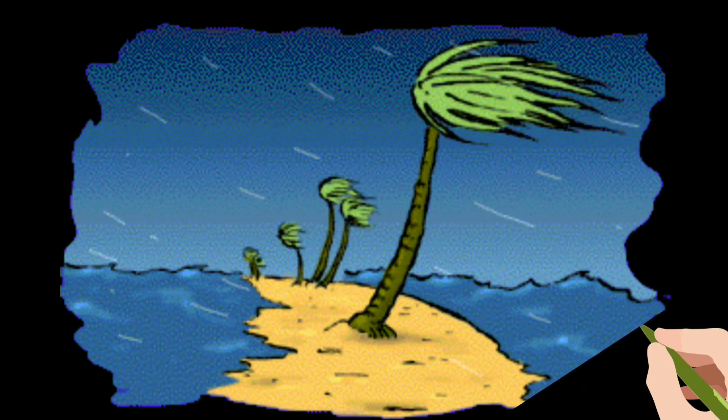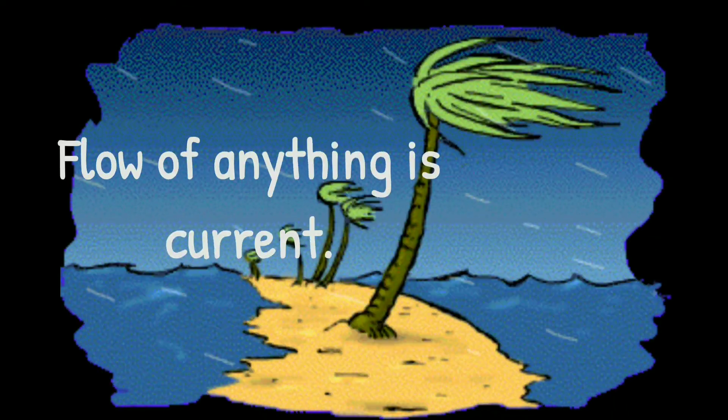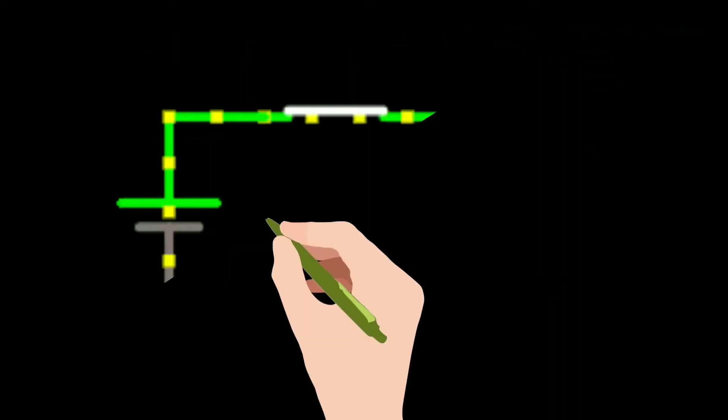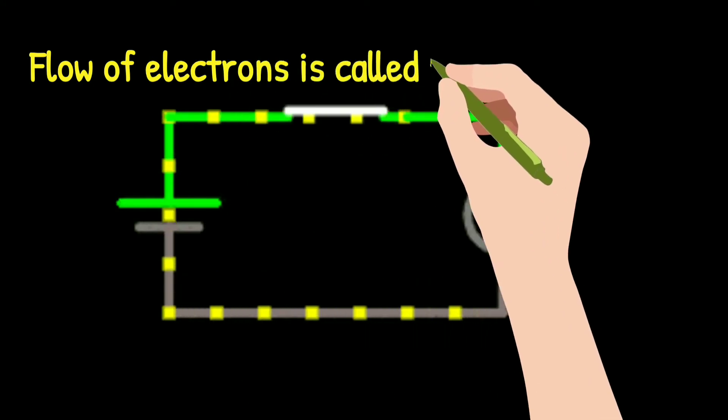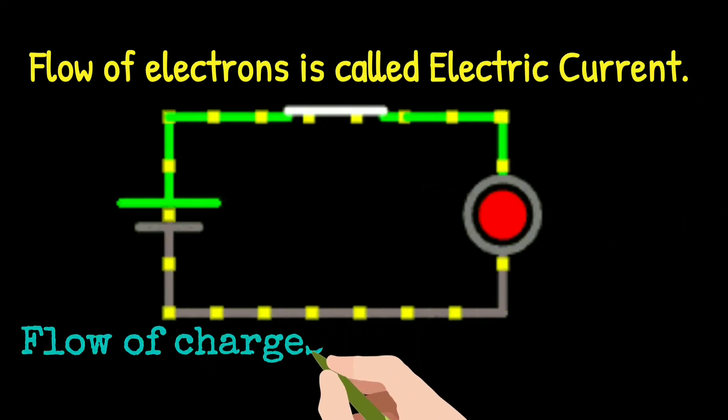So flow or movement of anything is called current. Similarly, flow of electron is called electric current. Since electron possesses a particular kind of charge, we can say that flow of charge is called electric current.